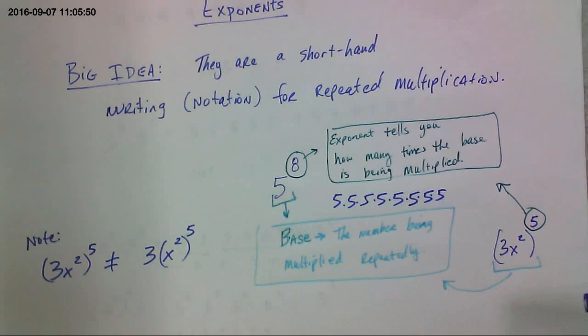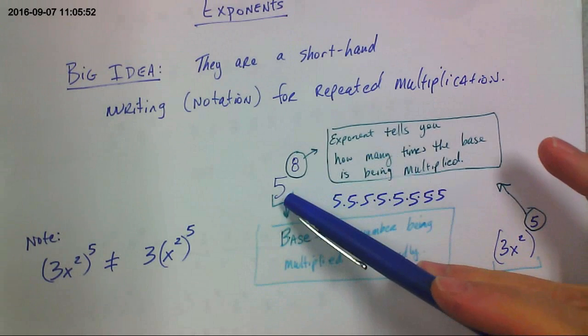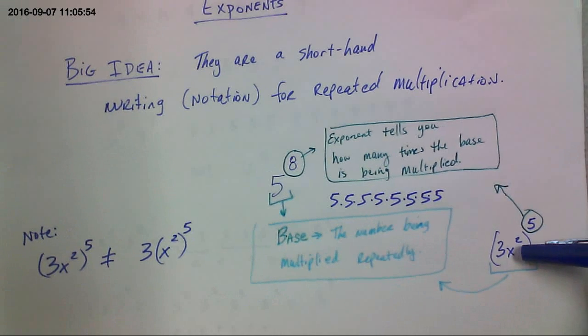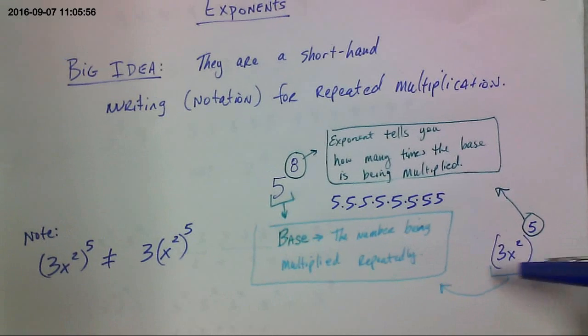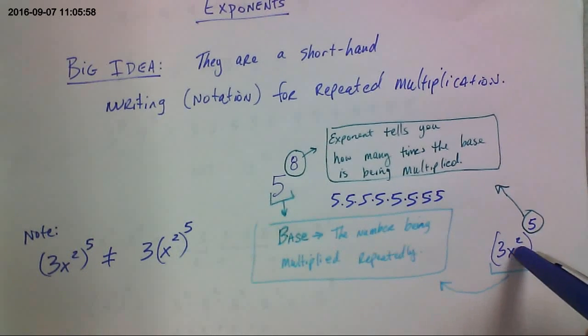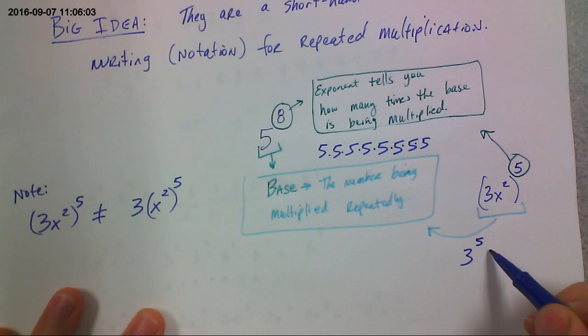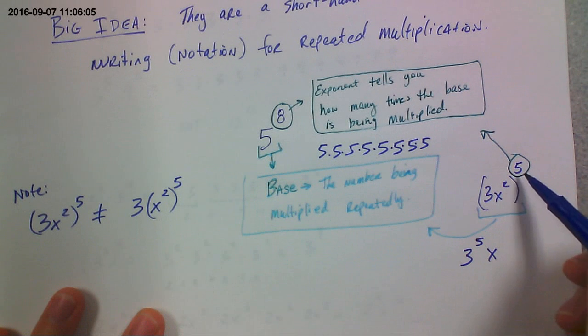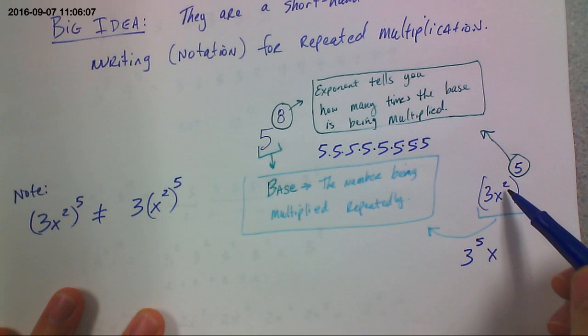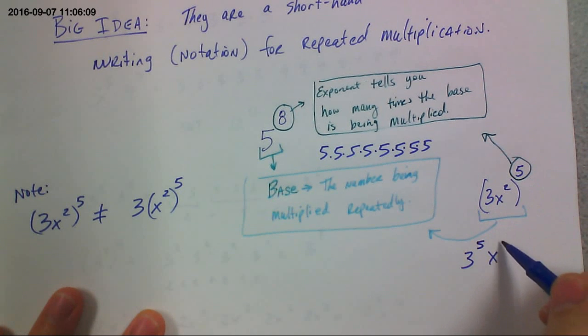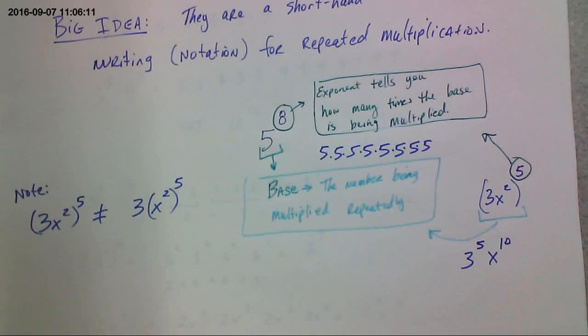Okay, now what gets confusing sometimes is what is actually the base. For example, here. 3x squared parentheses. That means 3x squared is the base. There would be 5 of these multiplying together. So that would be 5 3s multiplying together and 5 x squareds multiplying together. Each one of those x squareds is 2. There's 5 of them. That makes 10 x squareds. Okay?